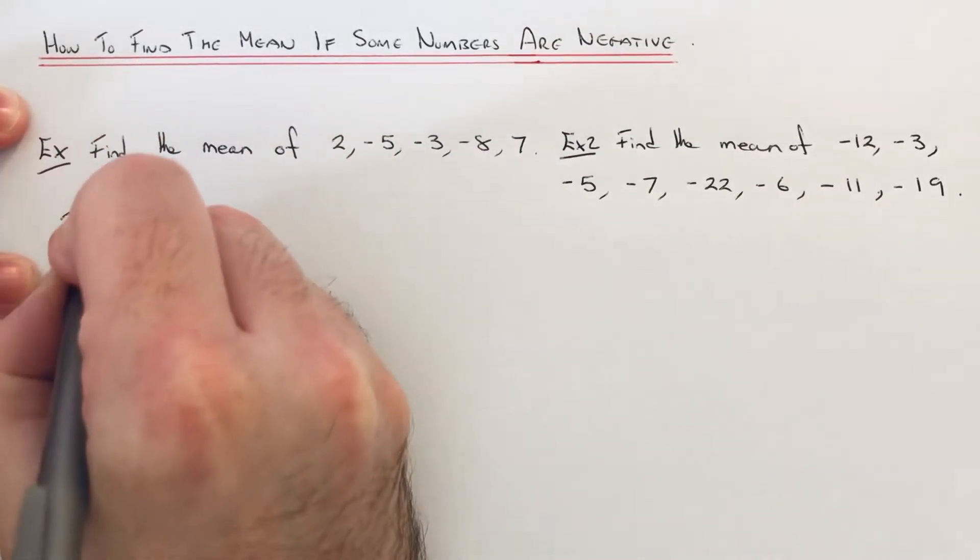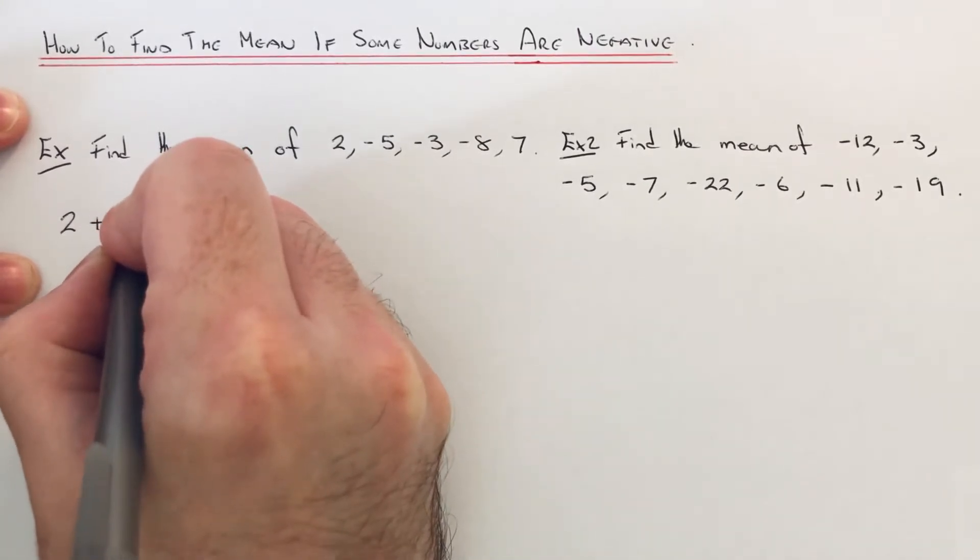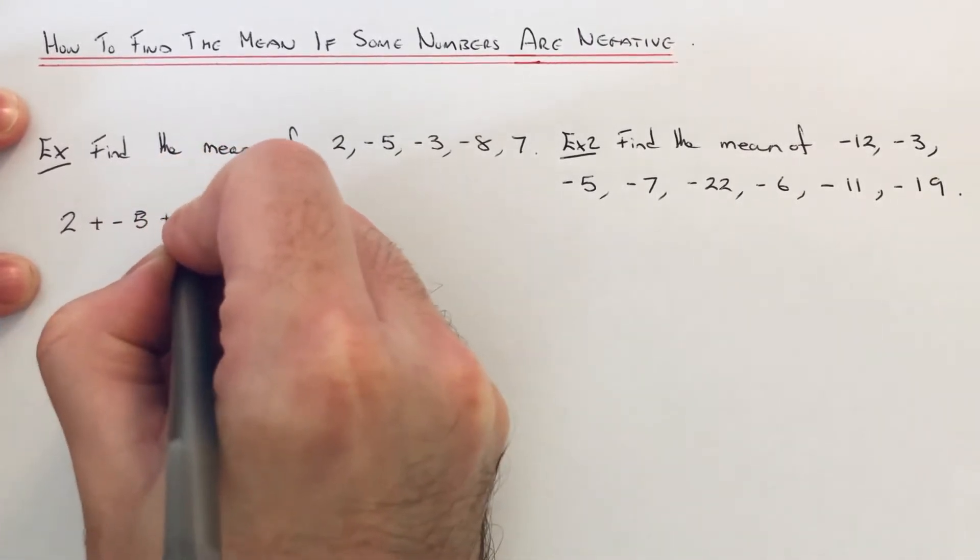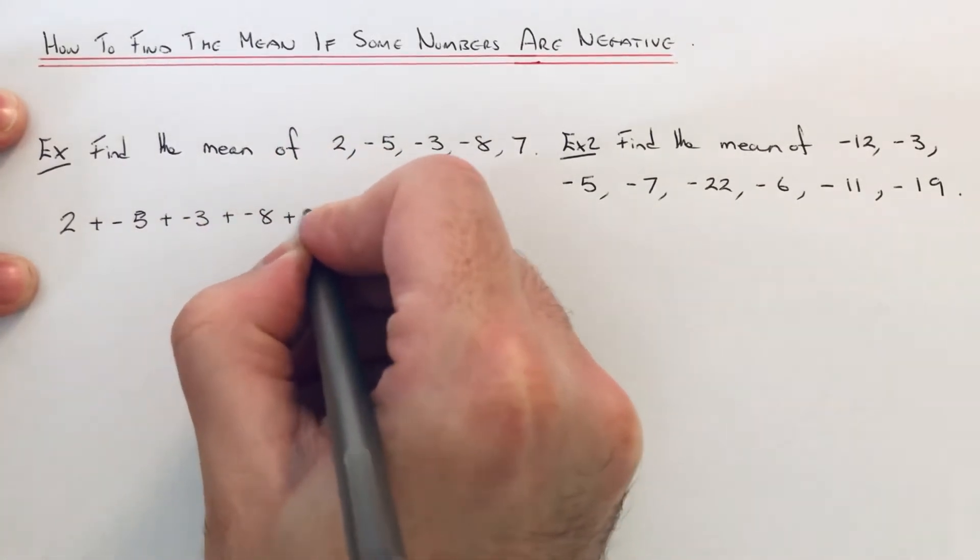Our first step is we just add these numbers up. So we've got 2 add minus 5, add minus 3, add minus 8, add 7.